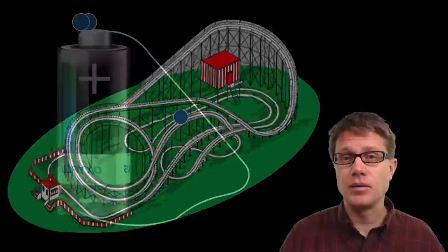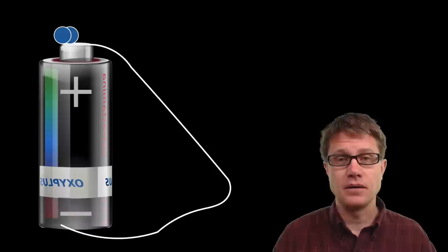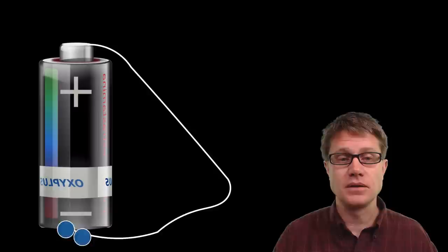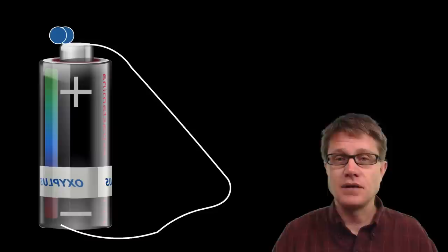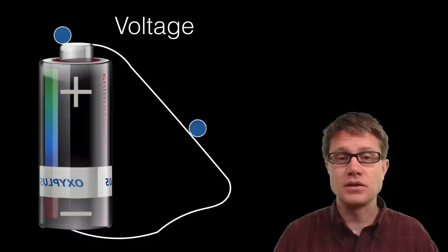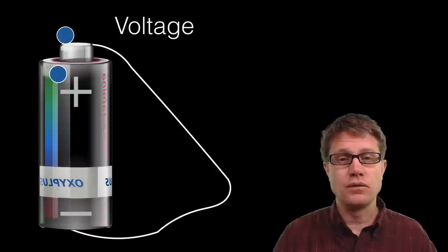Think of it like this: we have a battery which is like the lift in a circuit — it is giving the charge potential energy or potential difference. Then the charge loses that energy, comes back to the battery, and gains charge again. Charge is distributed through the whole thing, and that is why we cannot just measure voltage through something — it has to be measured across something, like across a battery or a light bulb.